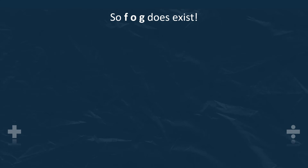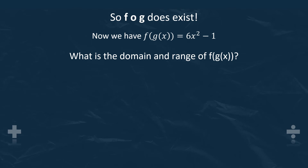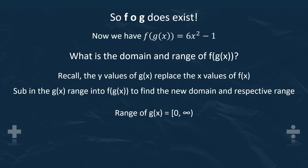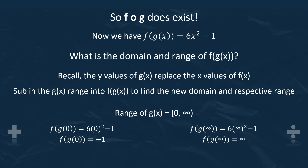Before we finish up with this example, we have to define FOG, our new composite function f of g of x — and it does exist. What is the domain and range of f of g of x? The y values of g of x replace the x values of f of x. If we sub in the g of x range into f of g of x, we can find a new domain and respective range. The range of g of x is 0 to infinity. Subbing in 0, f of g of 0 equals negative 1. Subbing in infinity, f of g of infinity equals infinity.